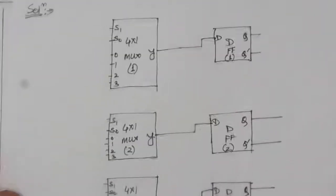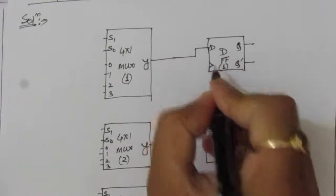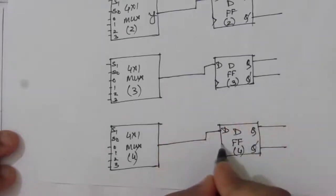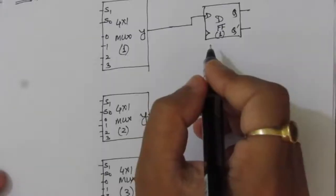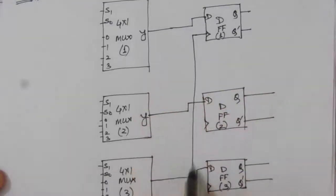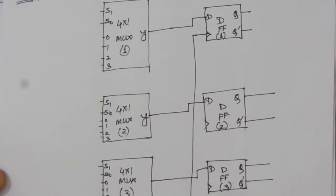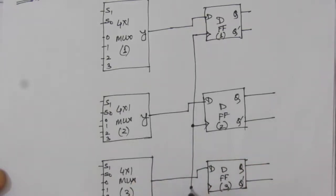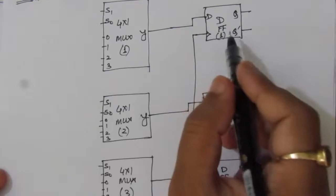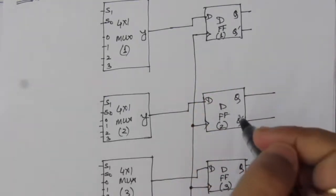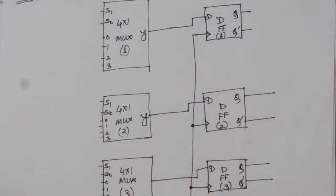We also need to give clock pulses to these flip-flops, so each flip-flop has one clock input. As per the question, we have to provide synchronous clock pulses. We apply a common clock and connect it to all clock inputs simultaneously. Whenever there is a transition at the clock input, all flip-flops will update their outputs based on their respective D inputs.